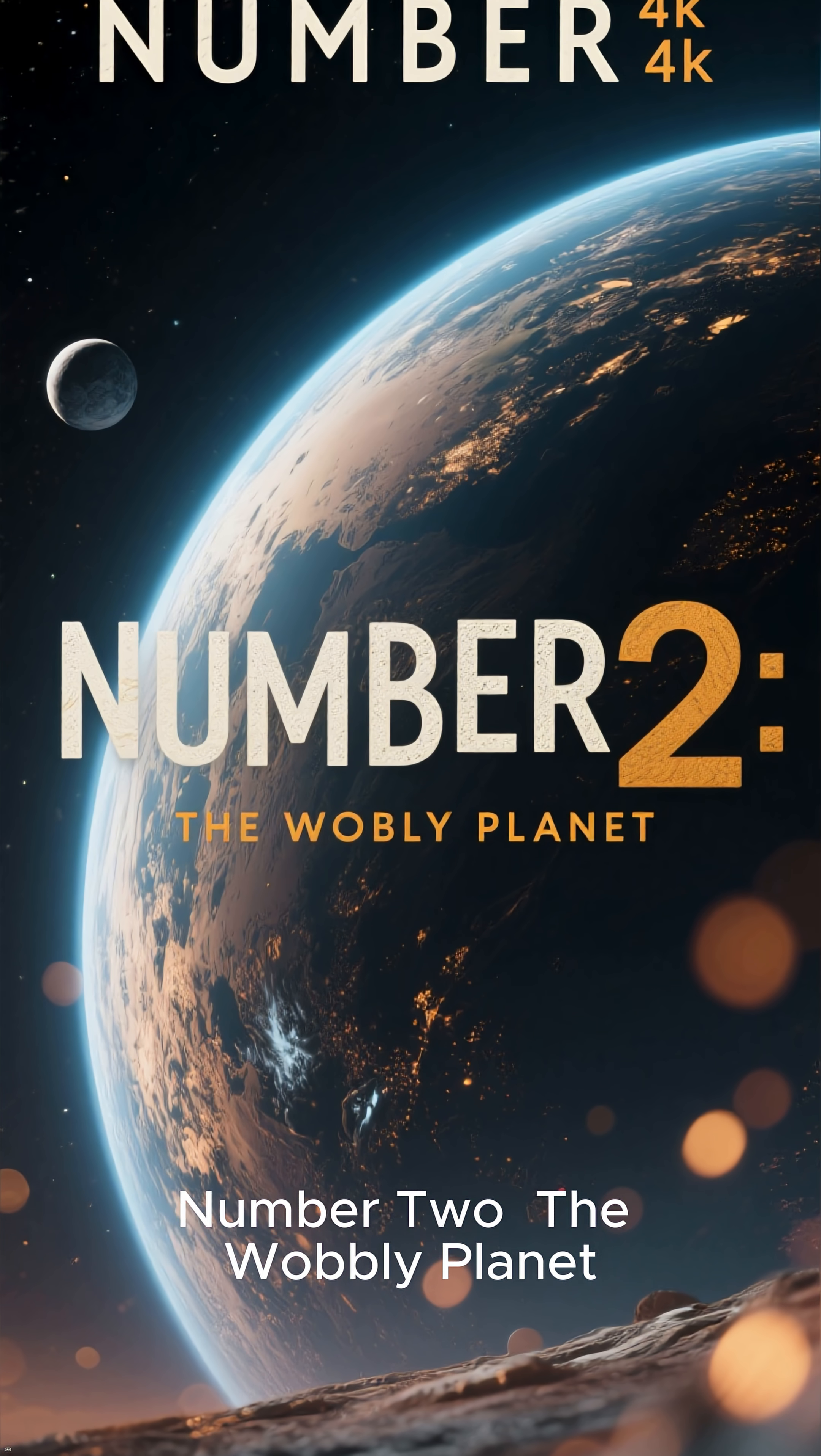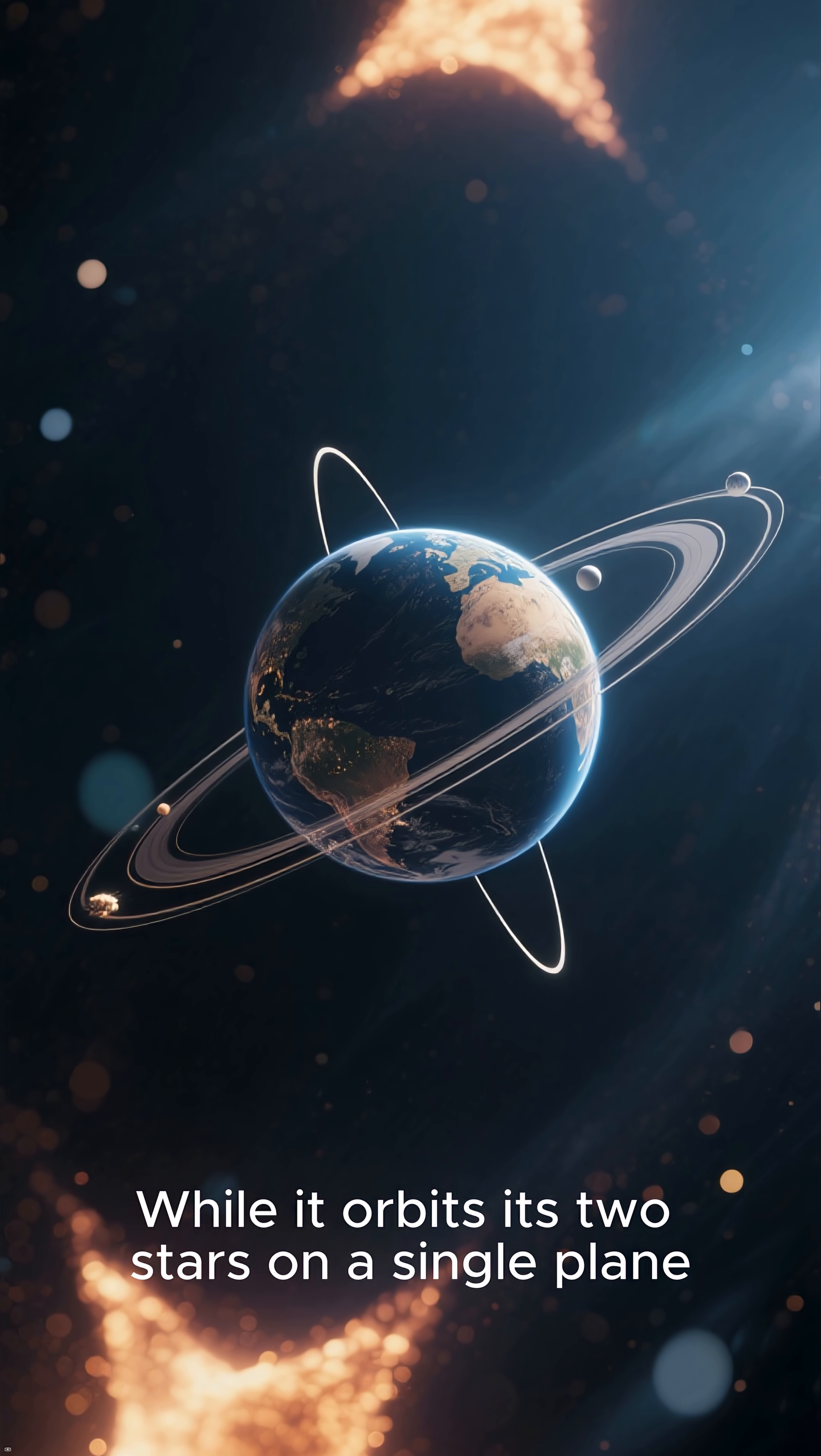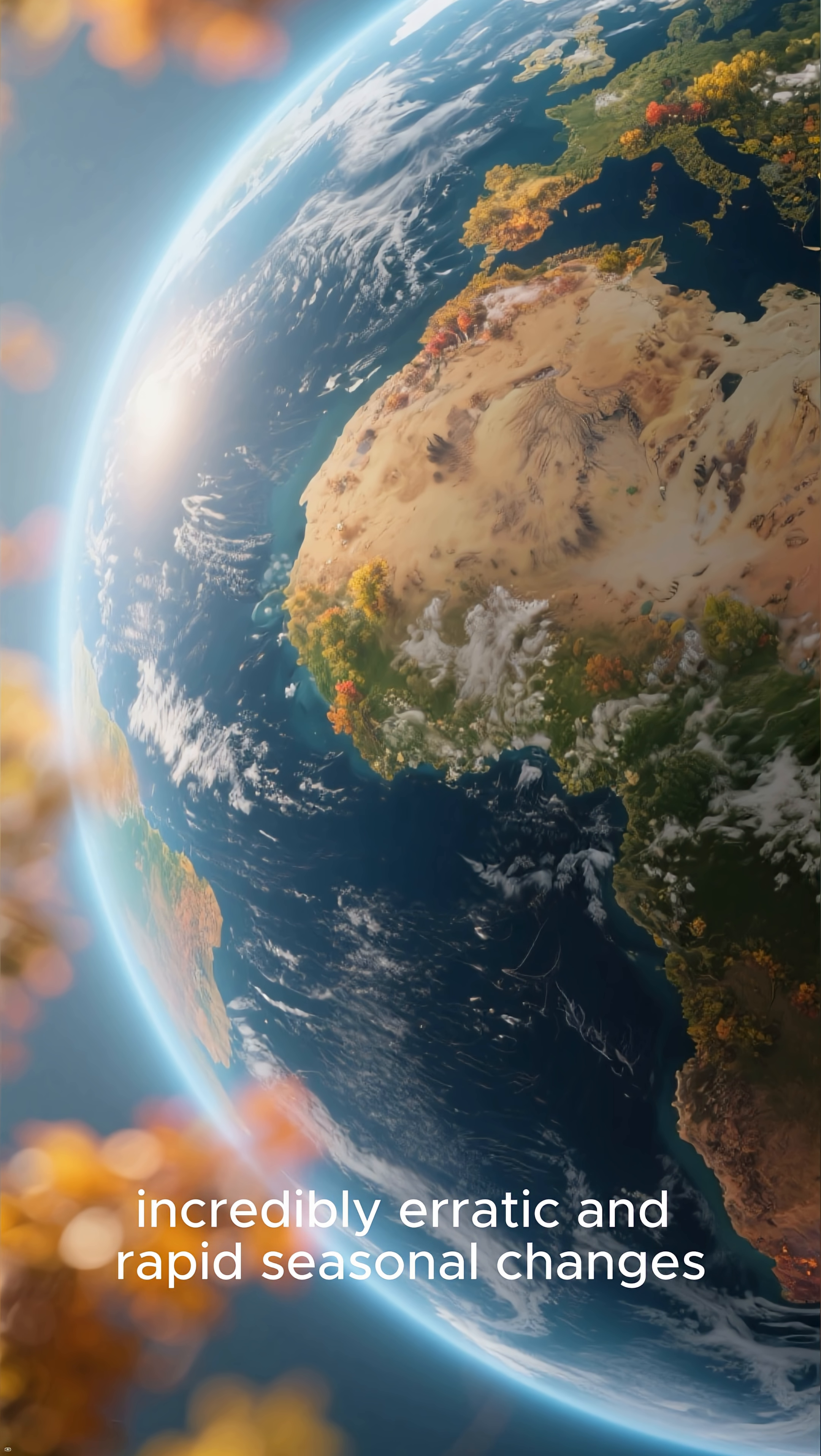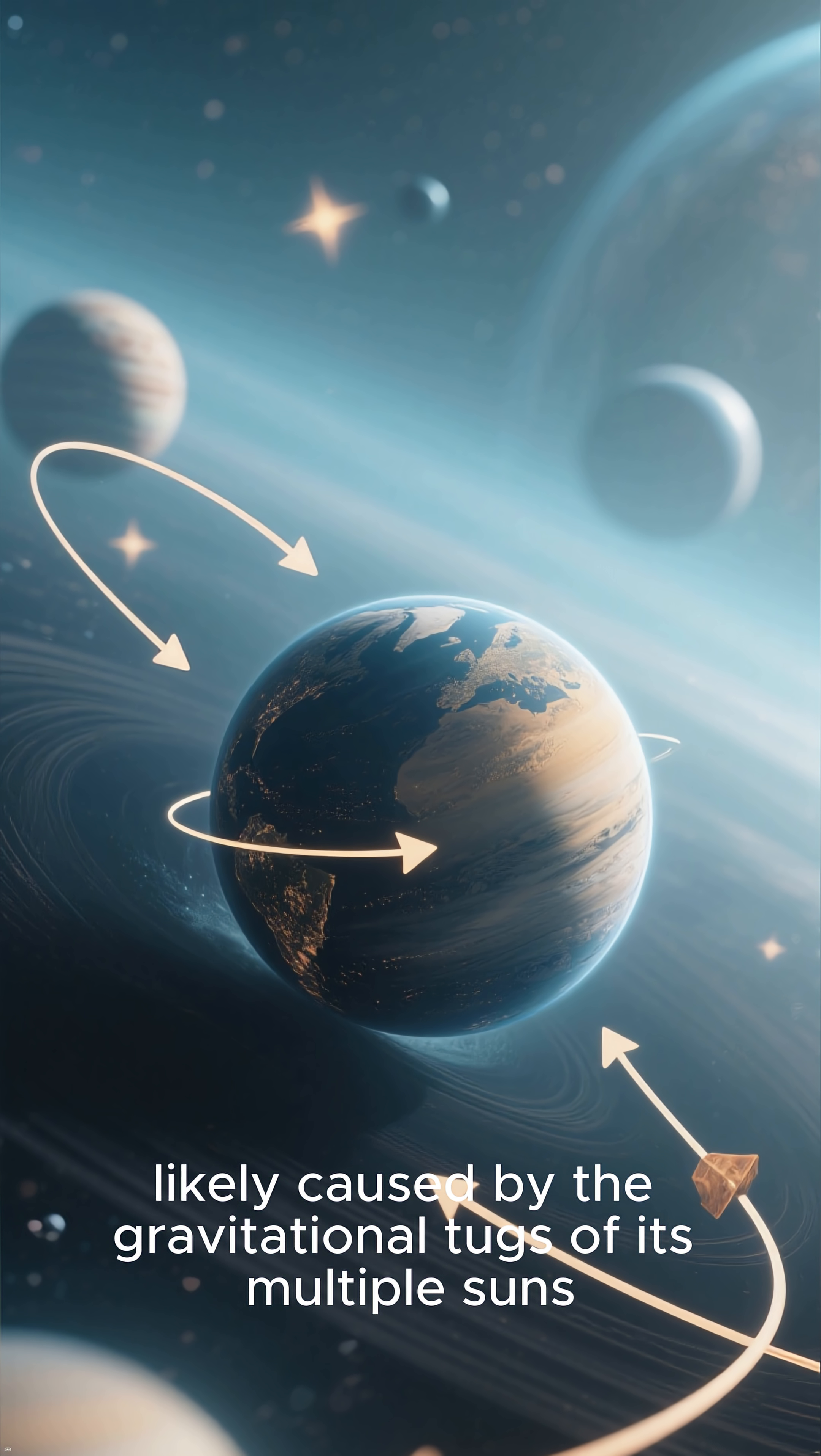Number two, the wobbly planet. Our next world is a strange one. While it orbits its two stars on a single plane, its axis is tilted at a significant angle, causing it to wobble. This unique wobble means the planet experiences incredibly erratic and rapid seasonal changes. This wobbly axis is a profound mystery, likely caused by the gravitational tugs of its multiple suns.